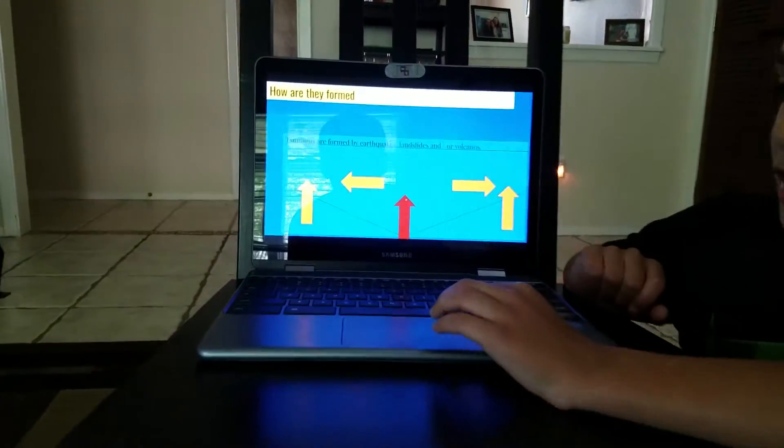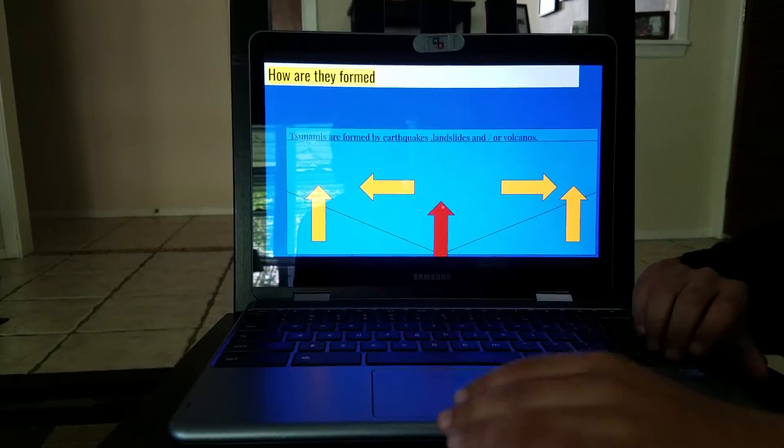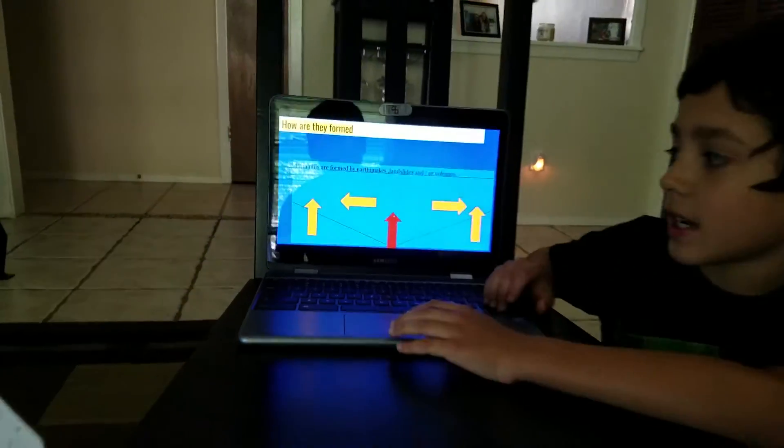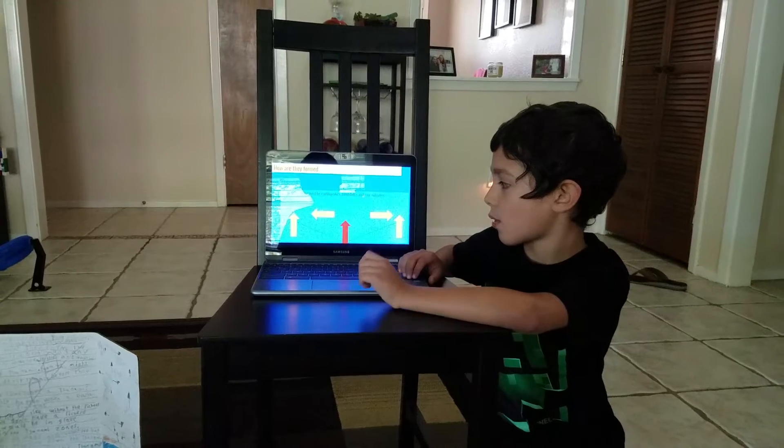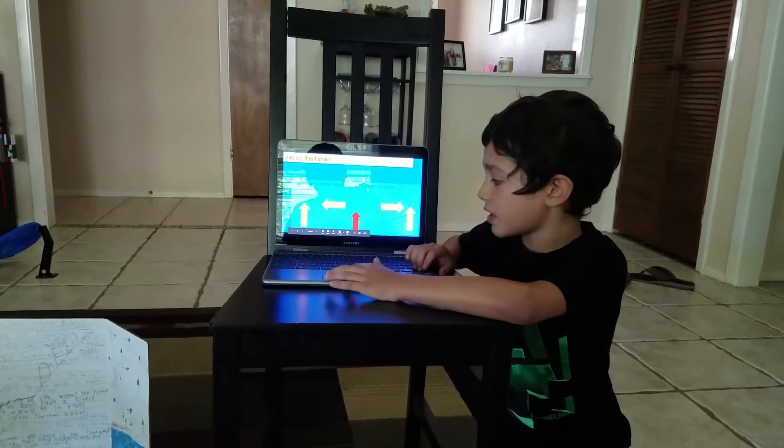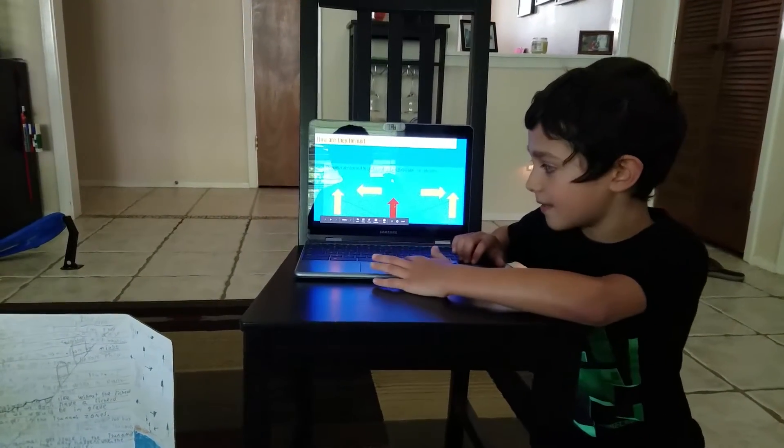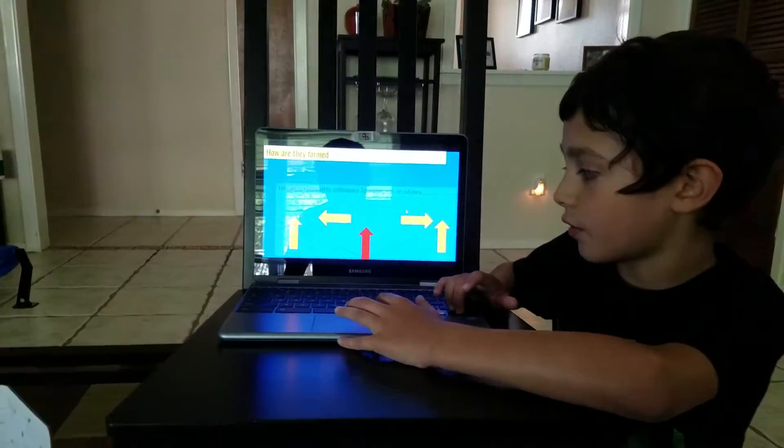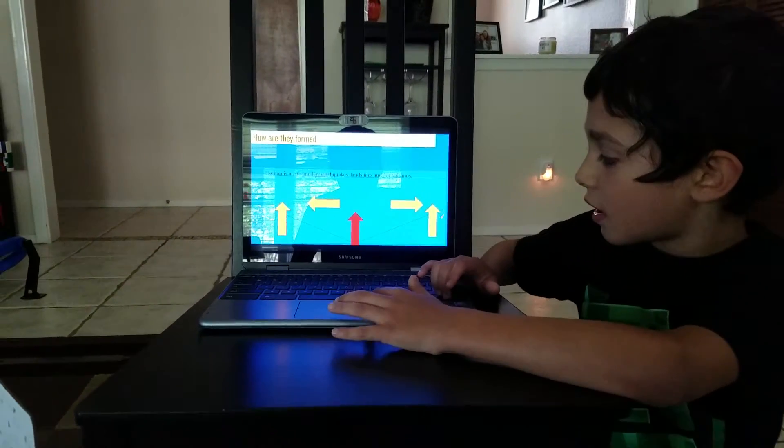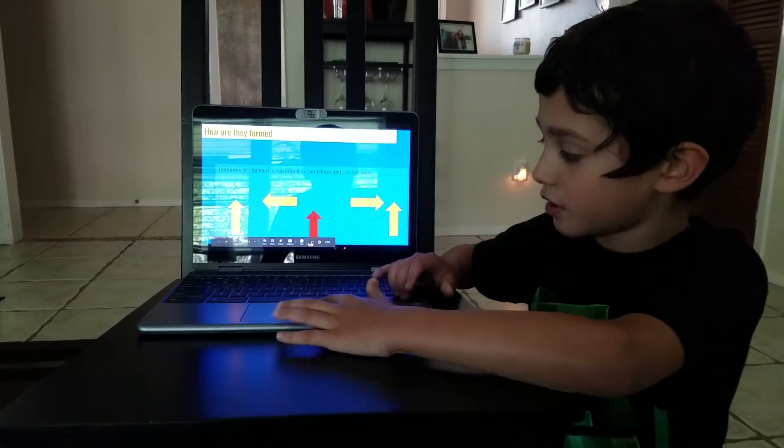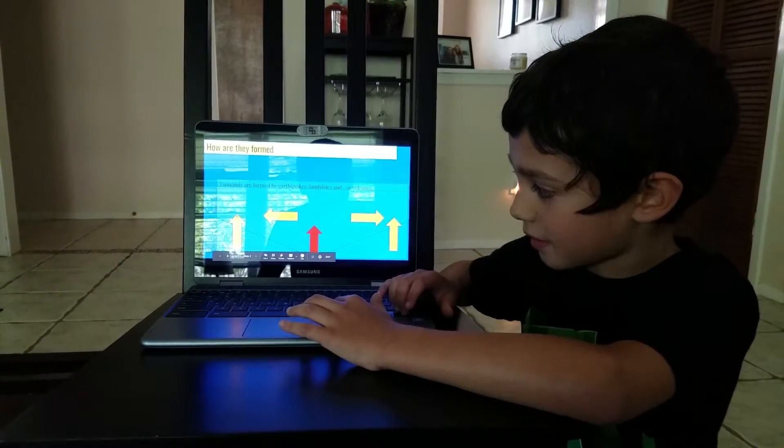My first question is how are they formed? Tsunamis are formed by earthquakes, landslides, and or volcanoes. So this is whatever causes it. This is the movement of water, which you'll see in all the diagrams. And then this is the pressure of land. You'll see that one too.